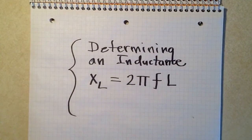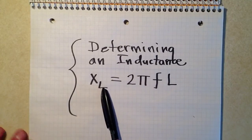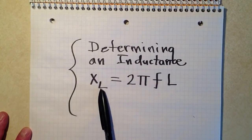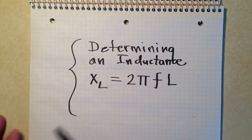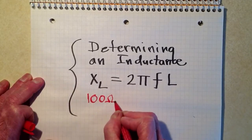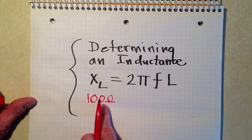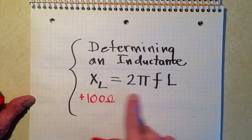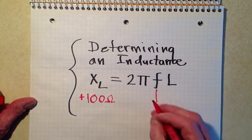Now let's flip that previous problem inside out. The previous video on this topic involved figuring out the inductive reactance based on the frequency and the inductance. Now suppose that you're in a situation where you need a certain amount of inductive reactance. Let's suppose for the moment that we want 100 ohms — ignoring the imaginary number aspect, since it isn't necessary here — positive 100 ohms of inductive reactance.